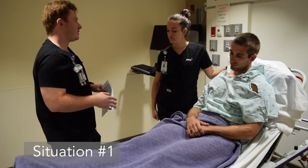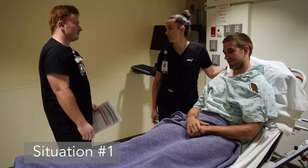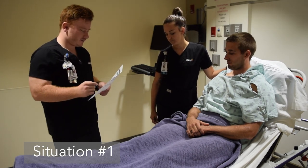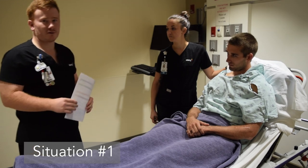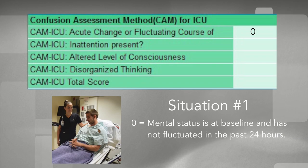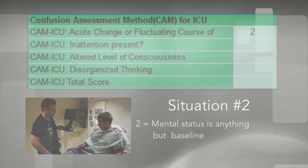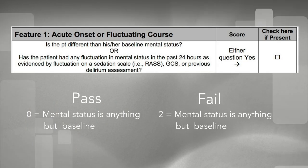The RN asks about the patient Cole's baseline mental status prior to admission — he was normal, usually calm, outspoken and outgoing. The RN then asks whether the patient has had any fluctuation in mental status in the past 24 hours using the RAS scale. Cole scores a 0. Patient 1 receives a score of 0 because his current mental status matches his baseline and has not fluctuated in the past 24 hours. A patient would score a 2 if mental status had been anything but baseline. In this category, the score is either 0 for passing or 2 for not passing.